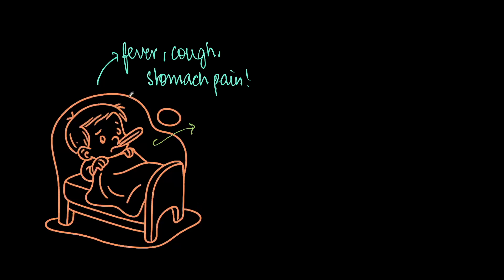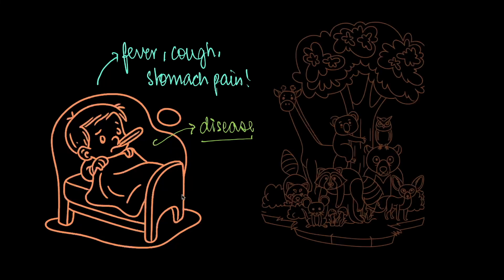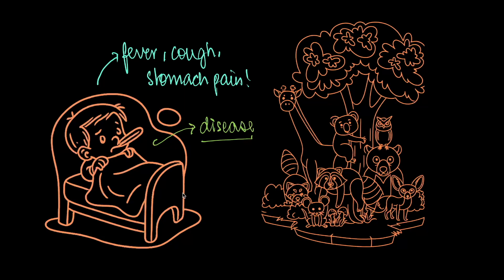Now these are often signs that an individual is coming down with a disease. In humans, we are able to understand the signs and symptoms of a disease. But what about animals and plants? Do you think they fall sick just like us? Well, as a matter of fact, they do. And in this video, we are going to discuss the different diseases that affect plants and animals.